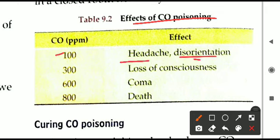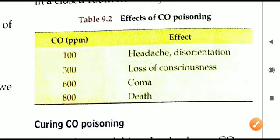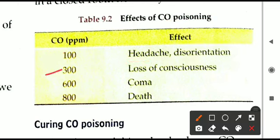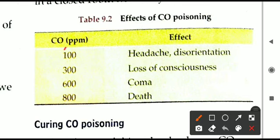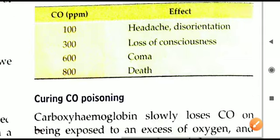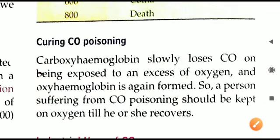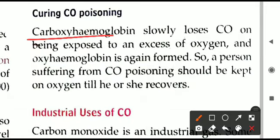At 100 ppm, carbon monoxide will cause headache and disorientation — the person is not able to concentrate. At 300 ppm, loss of consciousness occurs. At 600–800 ppm, it will cause death. As the carbon monoxide level increases, the problems also increase, finally leading to the death of the person.